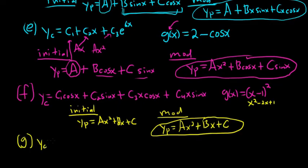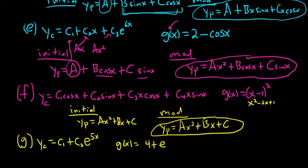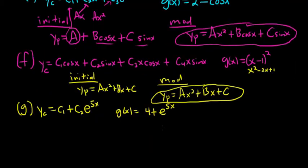Example G. Yc is equal to C1 plus C2 e to the 5x. And our g of x in this case is 4 plus e to the 5x.